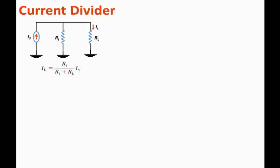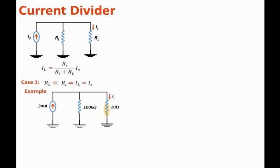We would like to investigate three important cases. The first case is when the load resistance is much much smaller than the source resistance. Then the load current is approximately equal to the total current that supplies the circuit, which is Is. Let's show that through an example: we have the load resistance to be 10 ohms, which is much much smaller than the source resistance, which is 100k.